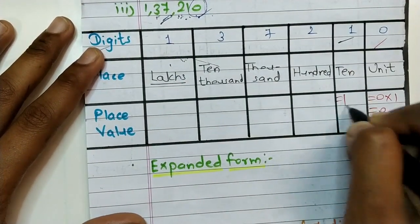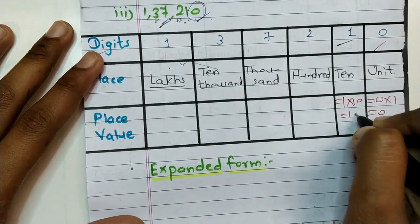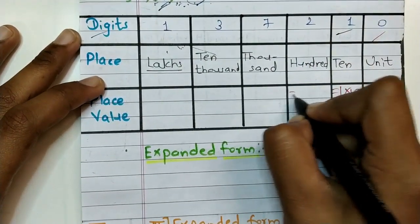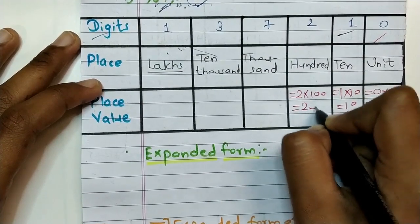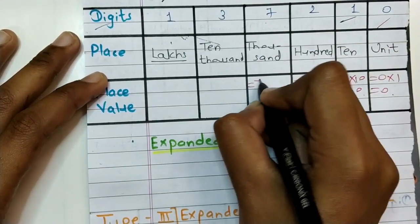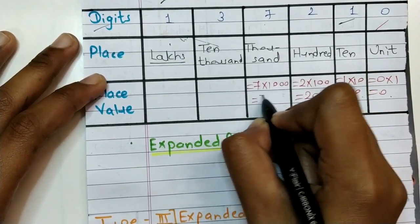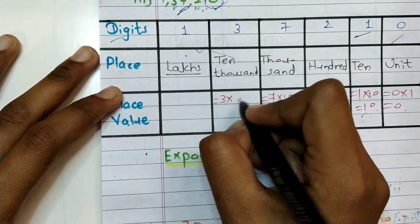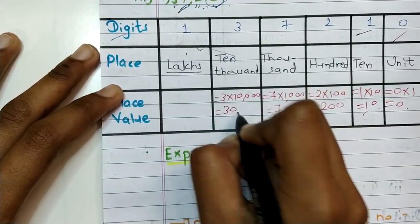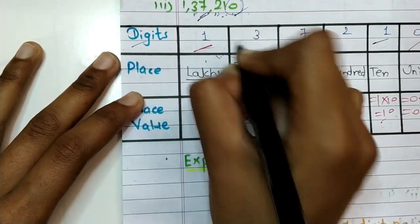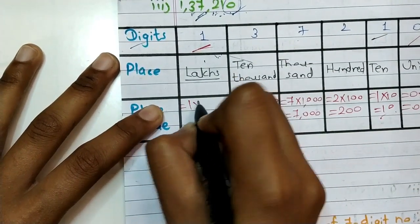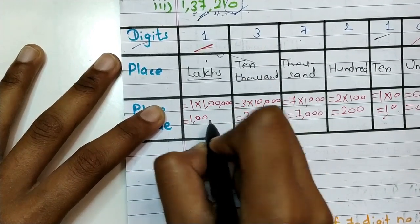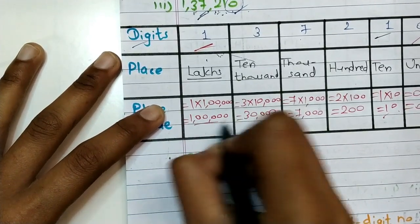Place value of two equals two into one hundred, which is two hundred. Place value of seven equals seven into one thousand, which is seven thousand. Place value of three equals three into ten thousand, which is thirty thousand. Place value of one equals one into lakhs, which is one lakh.